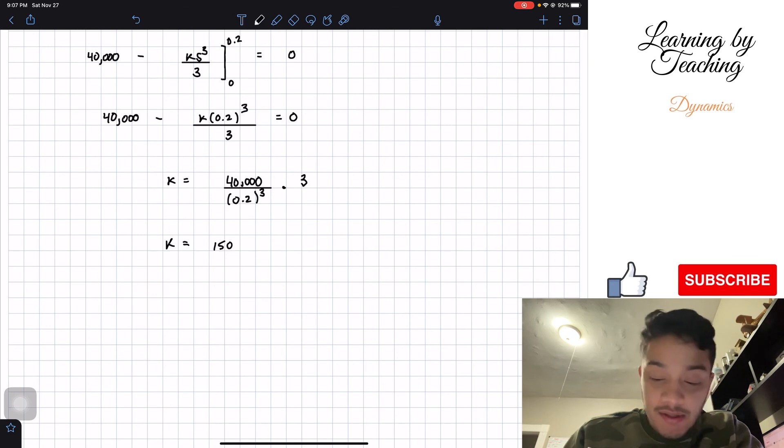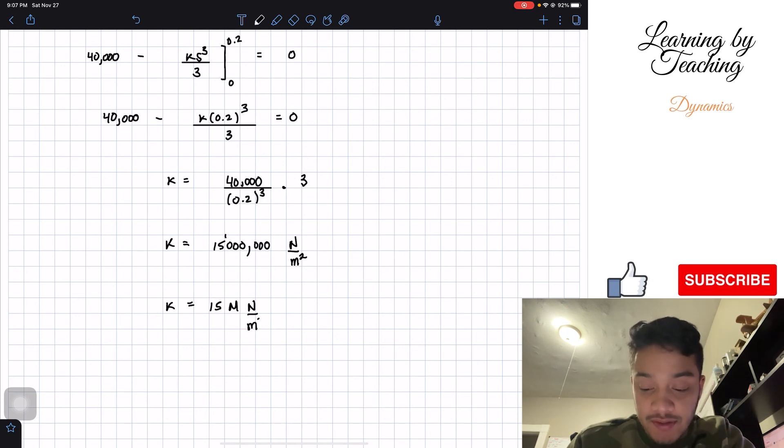15 million. So this gives me 15 million and the units are newtons per meter squared. Whenever you check your units make sure you get these units. Now if we convert this into mega we can simplify this as 15 meganewtons per meter squared and this should be our final answer.